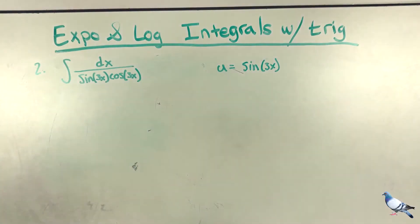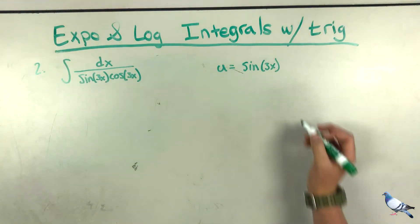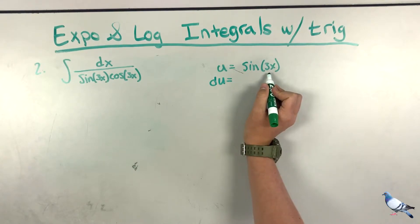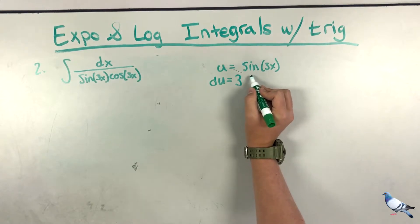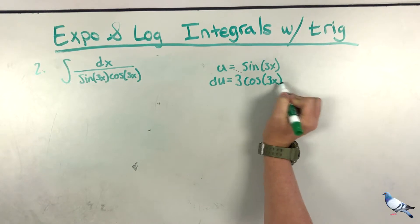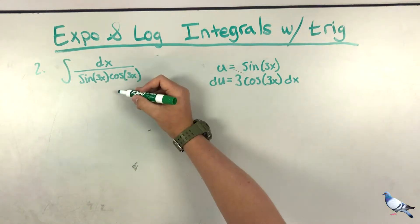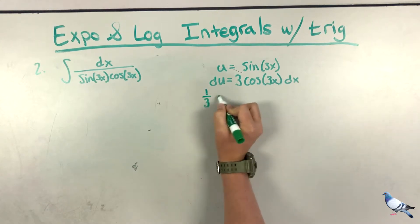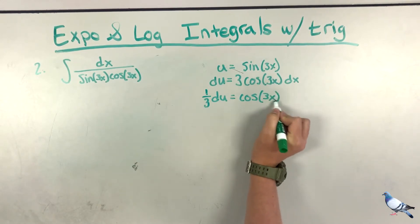I know if I take the derivative of sine I'm going to get cosine, and we can deal with the 3 later. Finding du: the derivative of sine(3x) gives 3·cosine(3x) dx. We don't have a 3 out front, so we divide by 3 and move to the other side: 1/3 du = cosine(3x) dx.